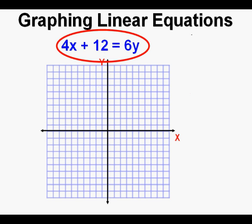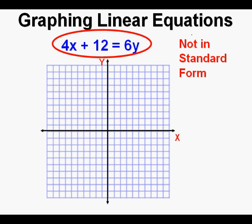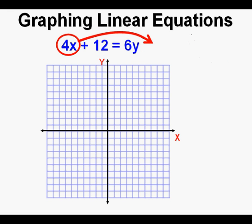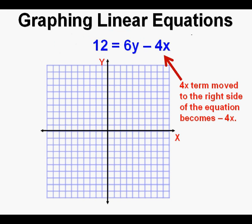Let's look at this other equation: 4x plus 12 equals 6y. This equation is not in standard form or slope-intercept form, so we need to rearrange it. The easiest way is to move the x-term, which is 4x, to the other side of the equation, where it changes signs to become minus 4x.